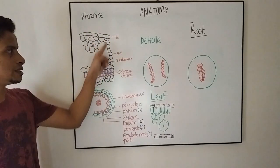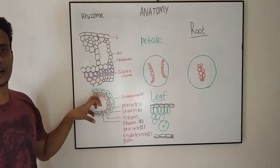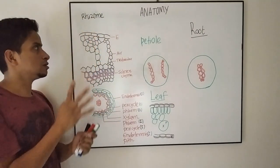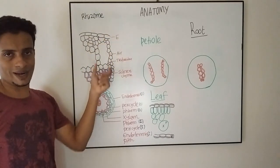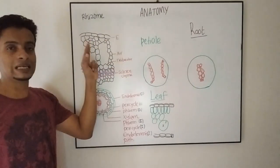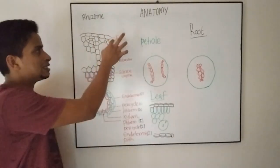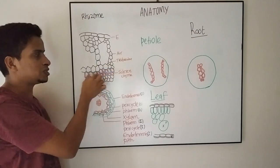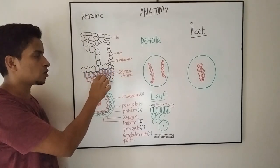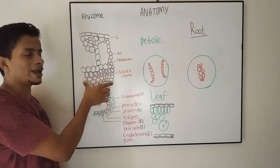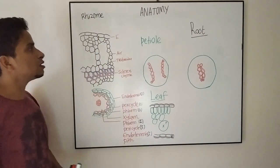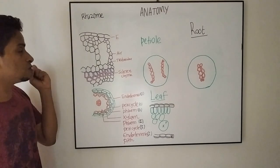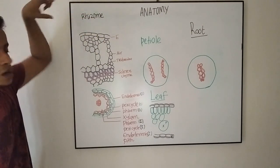The three major parts are epidermis, cortex, and the stele region. Epidermis is the outermost layer which is compact in arrangement, which is followed by the cortex. The cortex is differentiated into three major zones. Let us see what are the tissues in each cortical part.